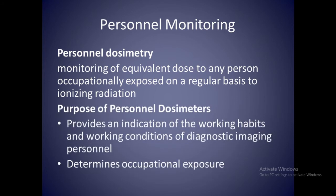The personal dosimeter provides an indication of the working habits and working conditions of diagnostic imaging personnel. It determines occupational exposure by detecting and measuring the quantity of ionizing radiation to which the dosimeter has been exposed over a period of time. However, it does not protect the wearer from exposure, because the instrument is only capable of detecting and measuring the amount of ionizing radiation to which it has been exposed.